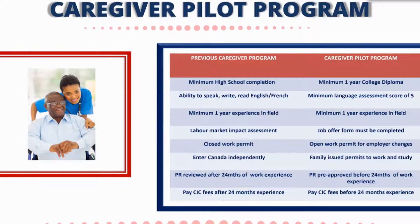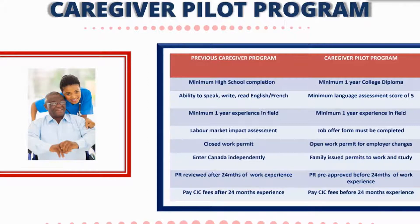Another exciting aspect is the open work permit in terms of your employer. Previously it was tied to a specific employer — if you wanted to change, you had to go through the six-month LMIA process again and wait for immigration to approve your work permit change. Now, if it doesn't work out with one employer, you can get hired by somebody else or even more than one person in order to maintain and keep on track of your work experience needed within Canada.